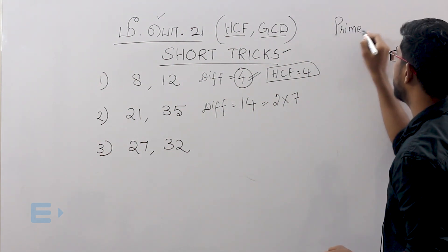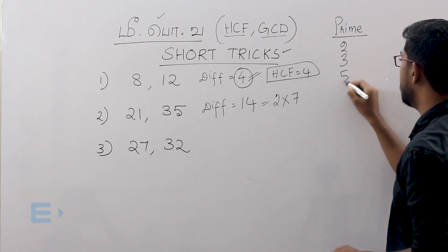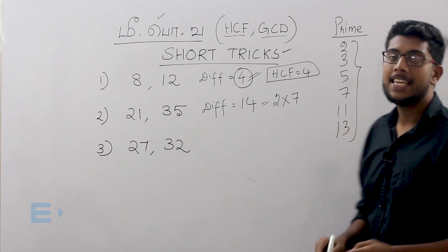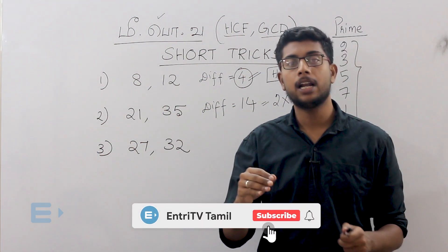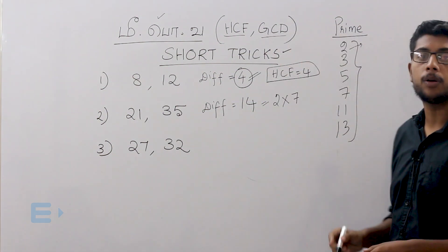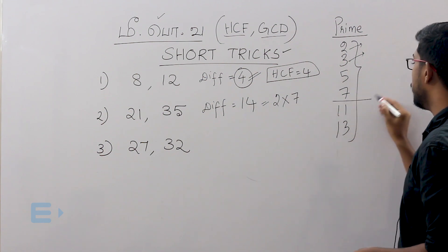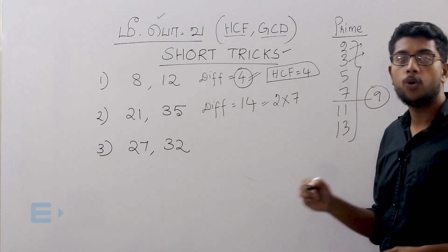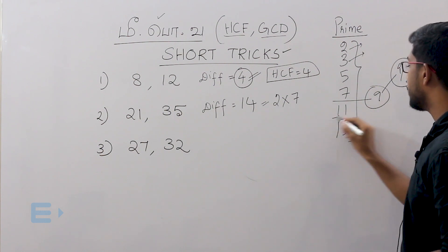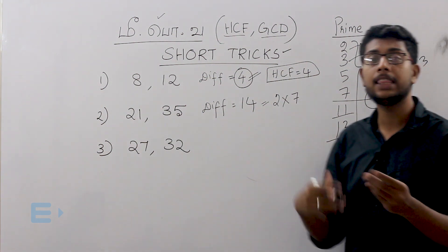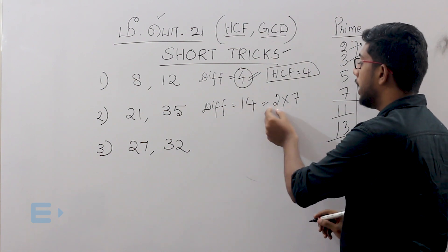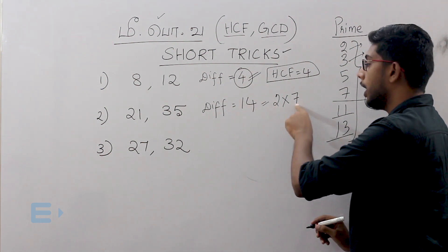Prime numbers are: 2, 3, 5, 7, 19, 13. Now before we ask, will it be a prime number? In the same circle, the power will be the factor. 2 is the factor, 3 is the factor. Why is 1 not a prime number? So 14 is 2 into 7. 2 is a prime number, 7 is a prime number.